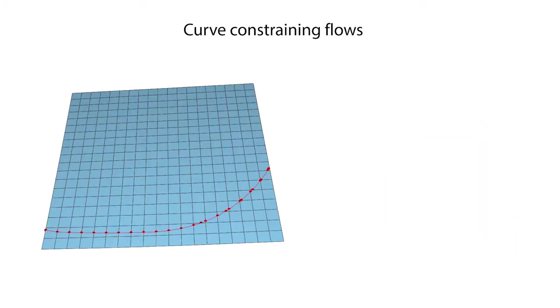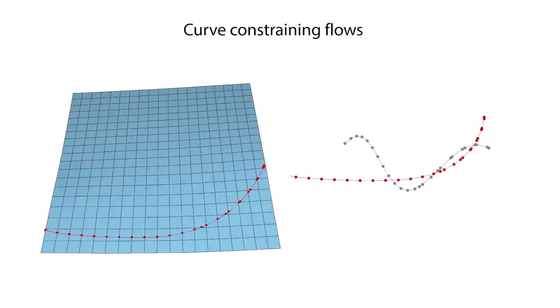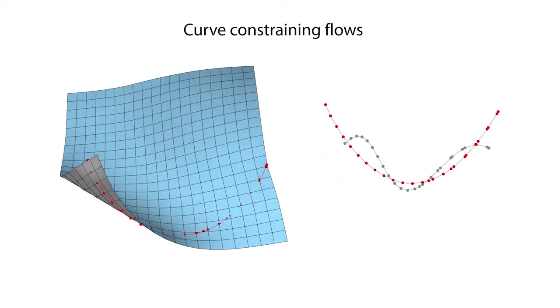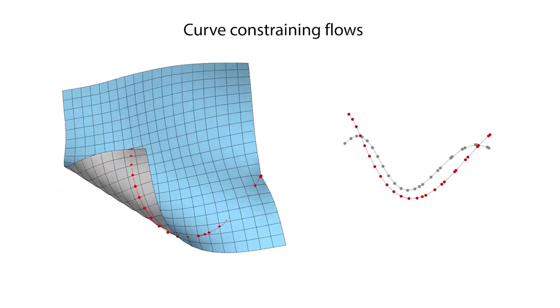Lastly, we show how to compute flows induced by constraining whole curves on a surface using positional constraints. We first represent a curve intrinsically as a set of points on edges, then choose the target curve positions and compute an interpolation between the curve's initial and target state.